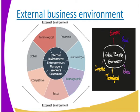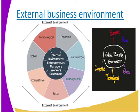We start by looking at this external environment. There is a diagram showing the external environment and the operations from outside the business. We have technology, economic, political issues, demographic, social issues, competitive, and global. That is the external part — you can see it is outside. The inner circle gives us the internal environment, which we covered in our previous lesson.